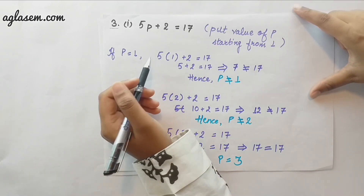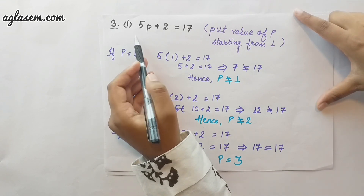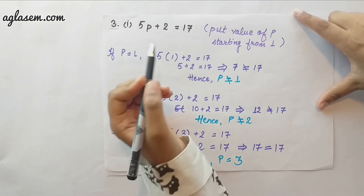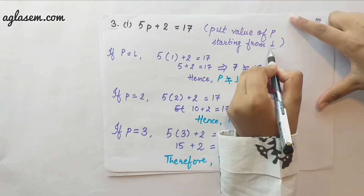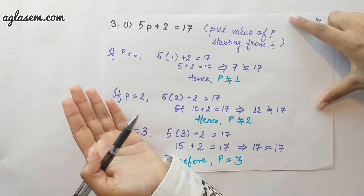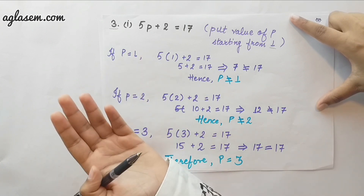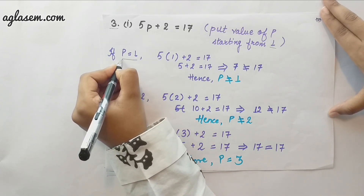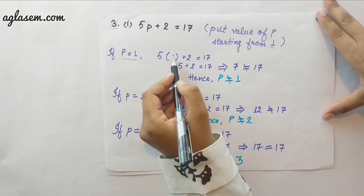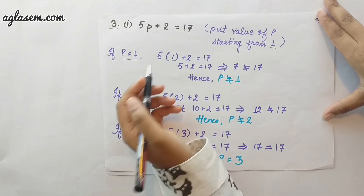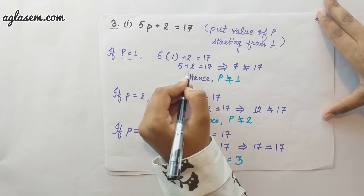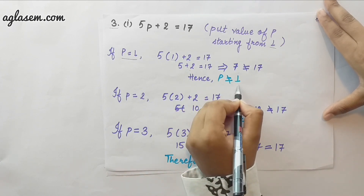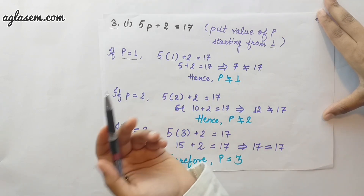In the third question, we use the hit and trial method to find which value satisfies the equation. We start putting the value of p from 1 and increase until we find the solution. For p equals to 1: 5 into 1 plus 2 equals to 17 gives 7, which is not equal to 17. So p equals 1 is not the answer.